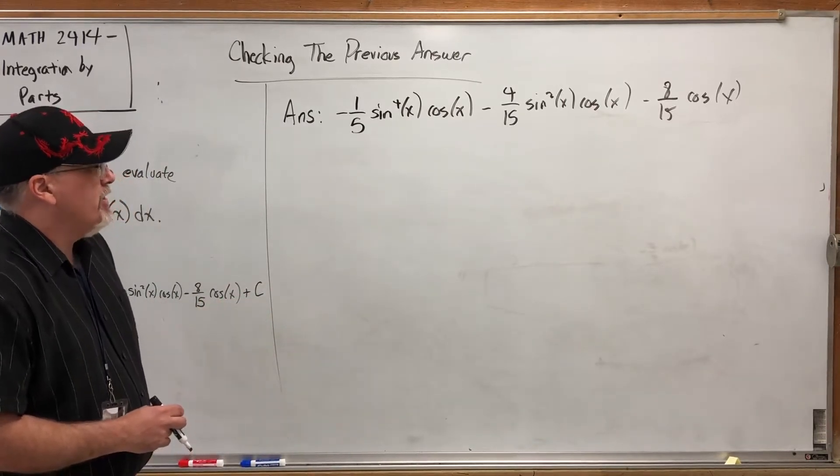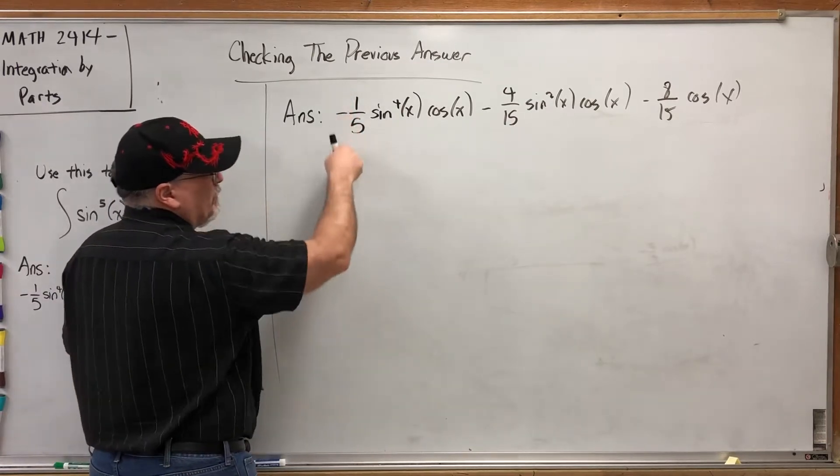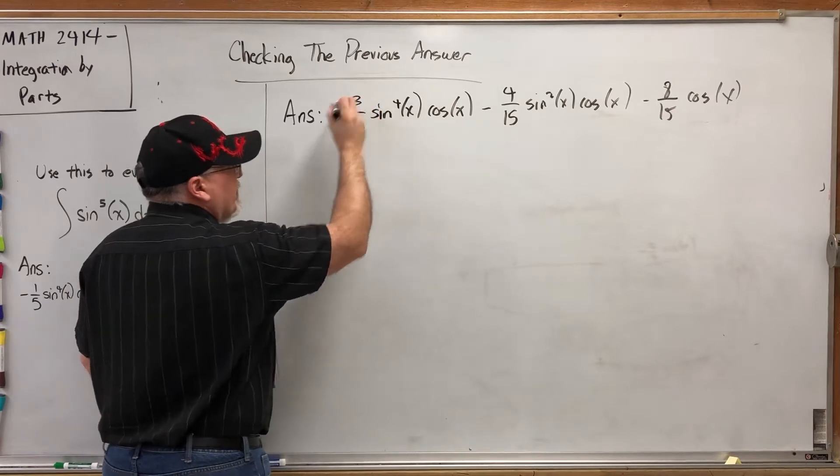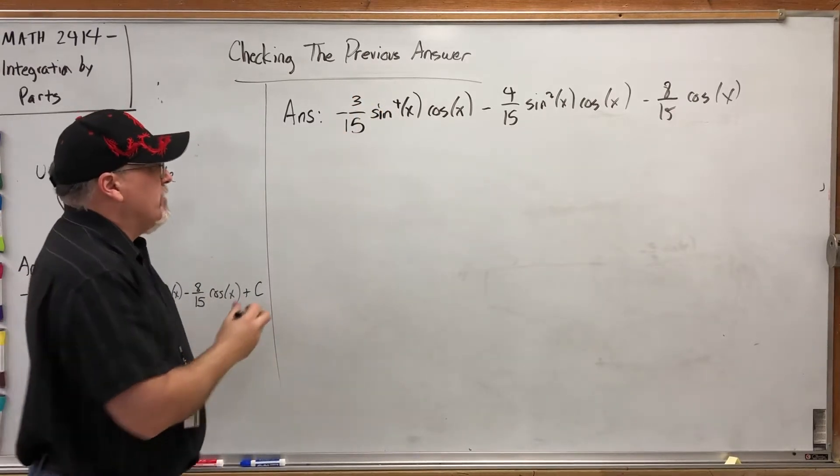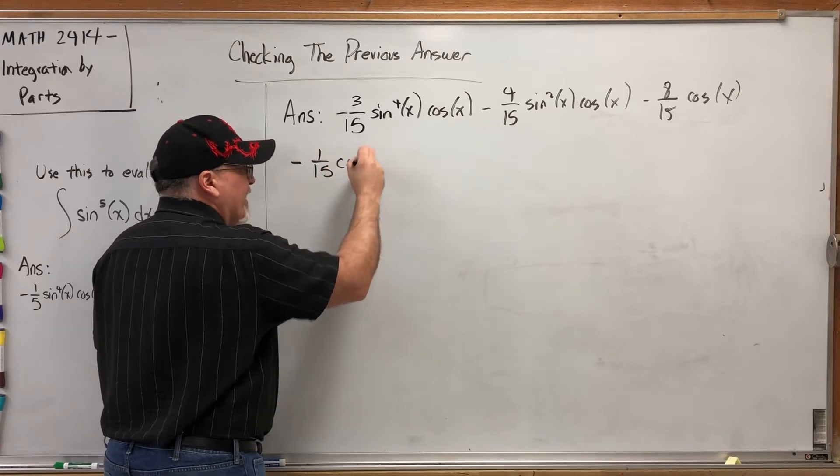In this case a common denominator would be 15. I can make this fraction over 15 easily by multiplying both sides by three, that would put a 15 on the bottom and a three on the top. So what I'm going to factor out is a negative, a one-fifteenth, and a cosine of X.